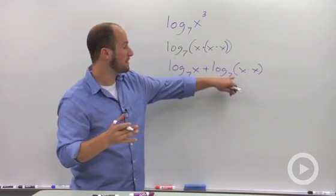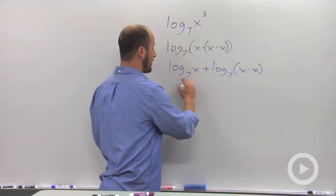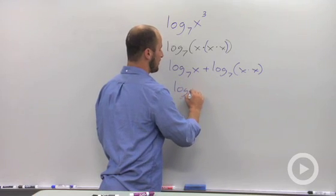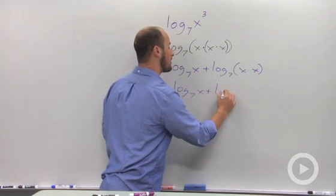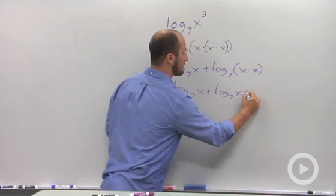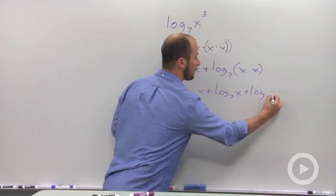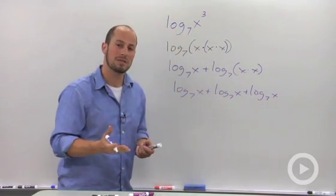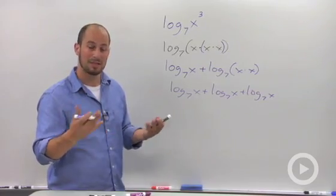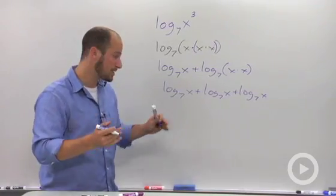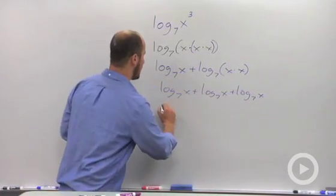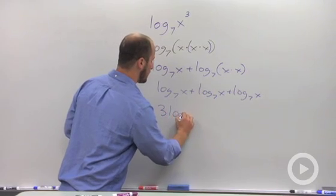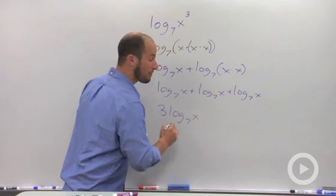Going through the same process of splitting this one up over here, what we end up with then is log base 7 of x plus log base 7 of x plus yet one more log base 7 of x. What you remember about just combining terms is if we ever have like terms, we can combine them. So we have three of the same things and this will give us three log base 7 of x.